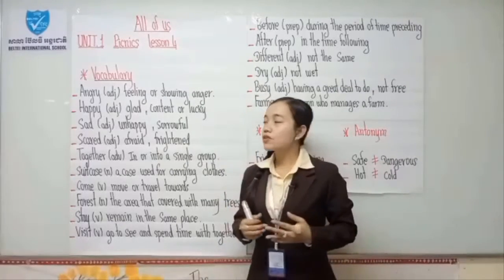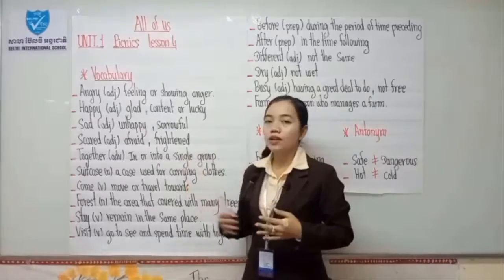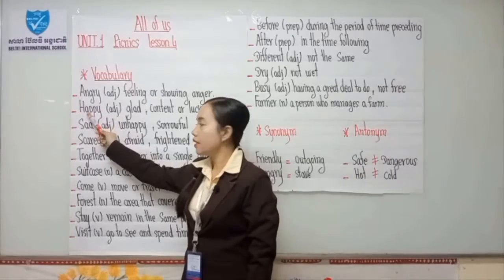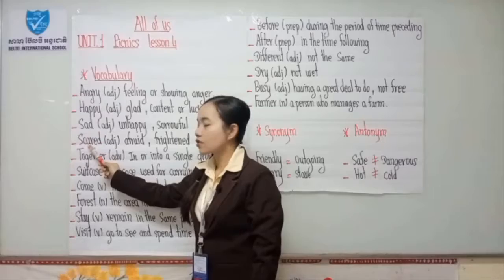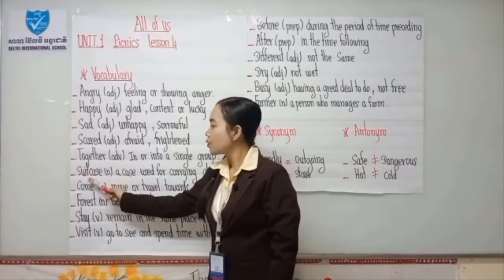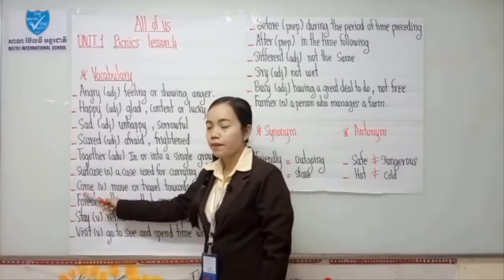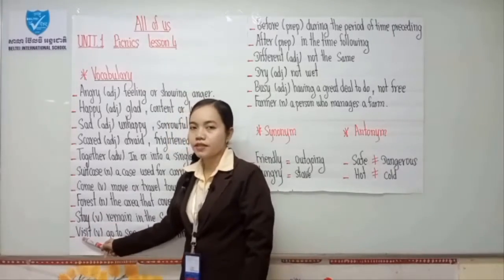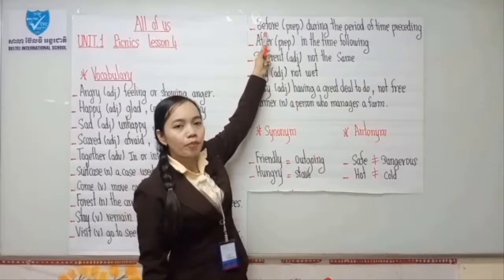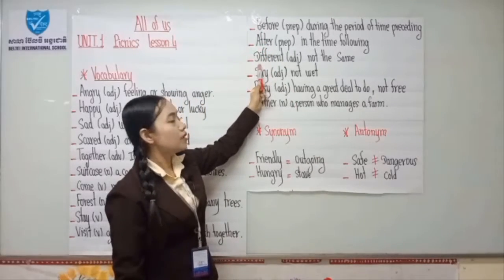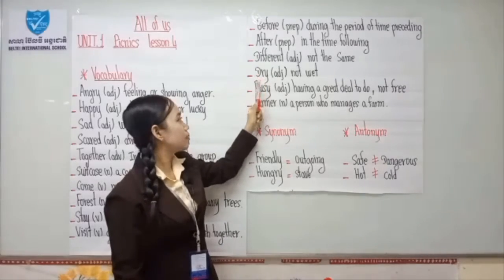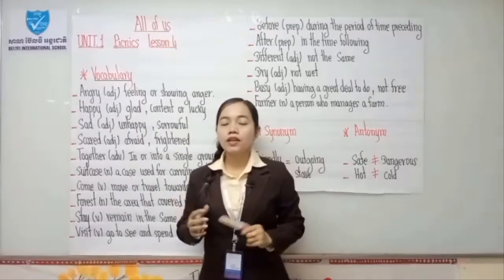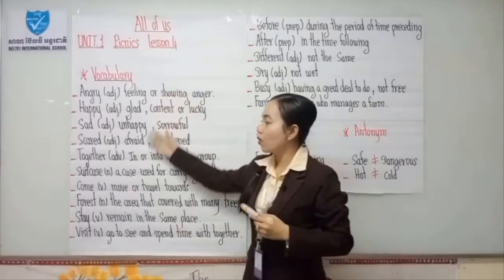Okay, so now let's start. I will practice the vocabulary with you together: angry, happy, sad, scared — together. Suitcase, come, forest, stay, visit. Before, after, different, dry, busy, farmer. Thank you everyone. If at any minute you don't understand the vocabulary, you can watch the video again and repeat the vocabulary with me.